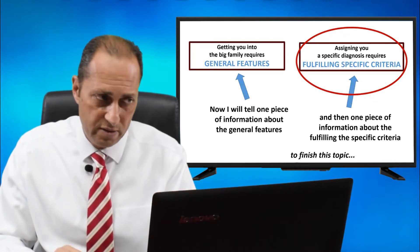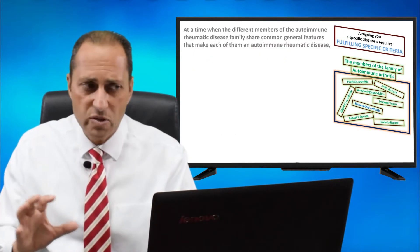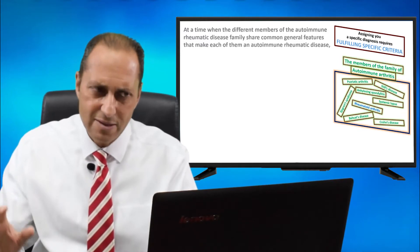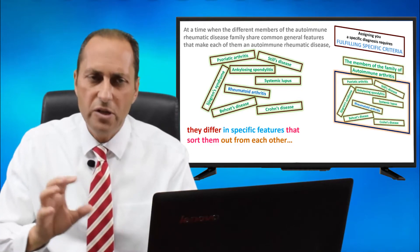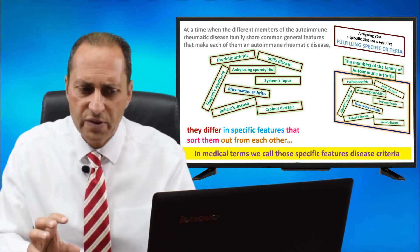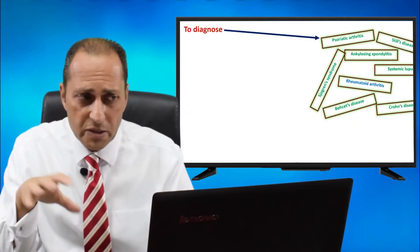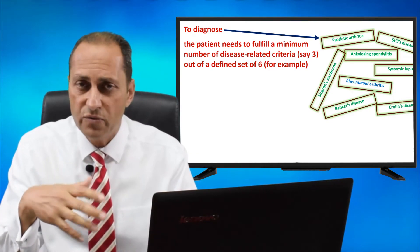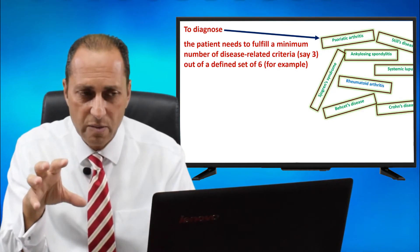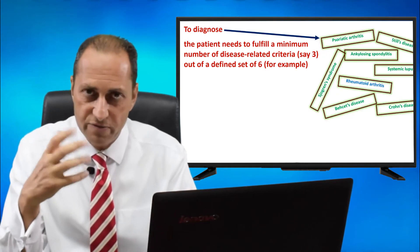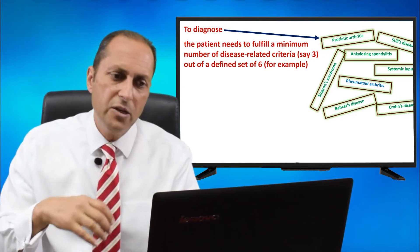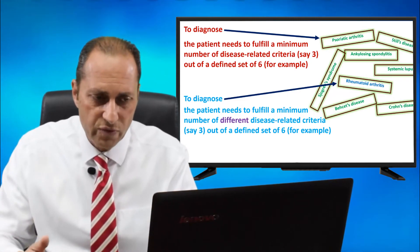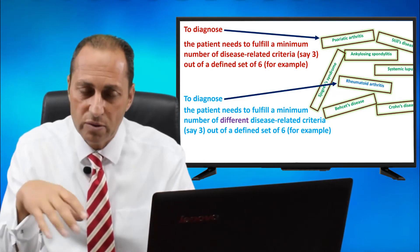The second point: fulfilling specific criteria. While the different members of the autoimmune rheumatic disease family share common features that make each one an autoimmune rheumatic disease, they differ in specific features that sort them out from each other. In medical terms, we call those specific features disease criteria. To diagnose psoriatic arthritis, for example, the patient needs to fulfill a minimum number of disease-related criteria — say three out of a defined set of six. Similarly, to diagnose rheumatoid arthritis, the patient needs to fulfill a minimum number of different disease-related criteria, like three out of six, for me to tell the patient they have rheumatoid arthritis.